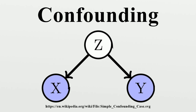While specific definitions may vary, in essence a confounding variable fits the following four criteria, given here in a hypothetical situation with variable of interest v, confounding variable c, and outcome of interest o: c is associated with o; c is associated with o independent of v; c is associated with v; and c is not in the causal pathway of v to o.